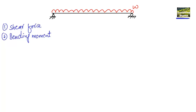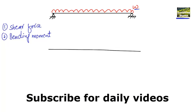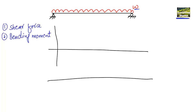We will explain this with the help of an example. Consider a simply supported beam with a uniformly distributed load W acting on it. If I draw the free body diagram of this beam, I will draw two reference lines — one for shear force and one for bending moment — showing the supports.